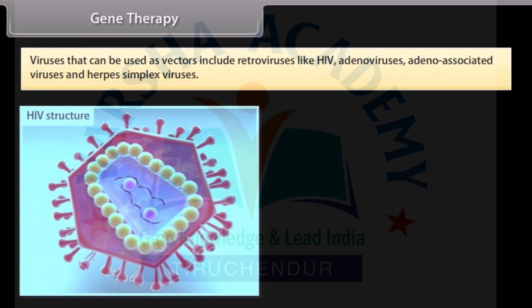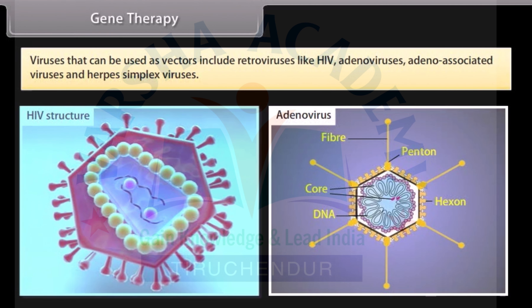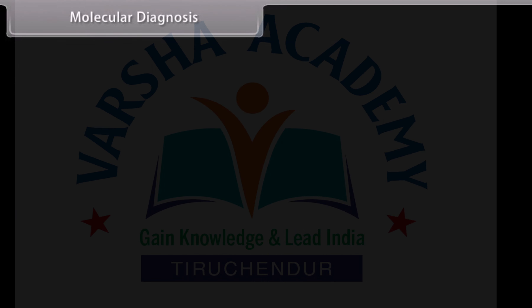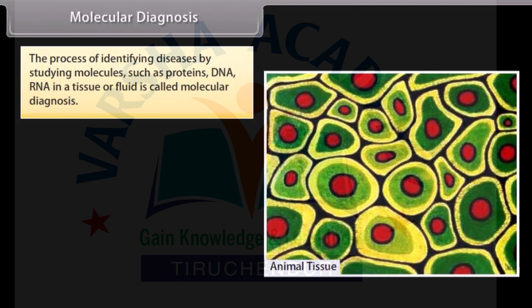Viruses that can be used as vectors include retroviruses like HIV, adenoviruses, adeno-associated viruses, and herpes simplex viruses. Molecular diagnosis: The process of identifying diseases by studying molecules such as proteins, DNA, and RNA in a tissue or fluid is called molecular diagnosis.